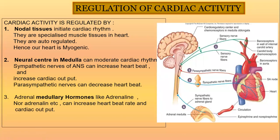Regarding the regulation of cardiac activity: when we say the heart contraction is auto-excitatory, that is a myogenic heart. The heart contraction starts from the SA node, which generates the electrical impulse. Regulation involves the neural center in the medulla and medullary hormones — including the adrenal gland, which produces adrenaline.